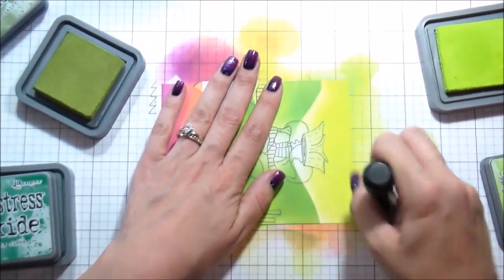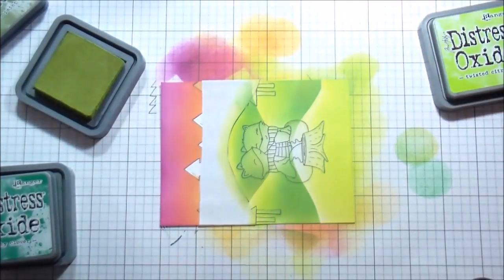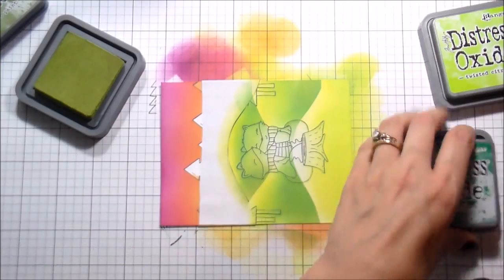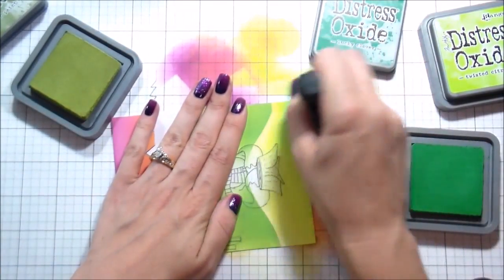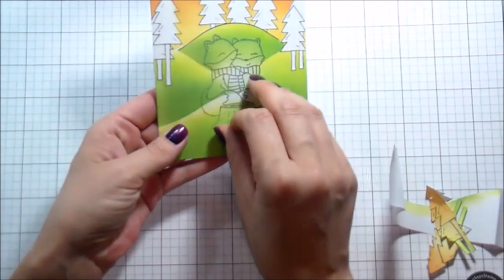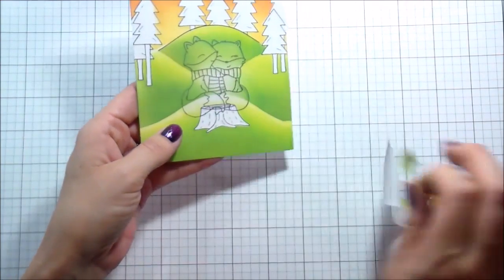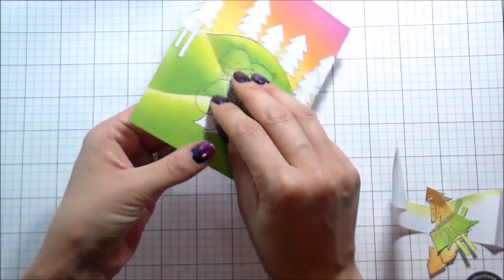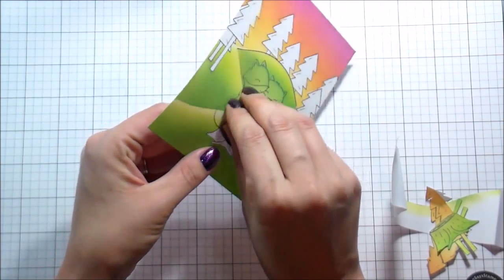The last way that we're going to just finish it off is just by adding some shading to the base of the card. Again, all the way up to that hill. I did add some more Twisted Citron because when I was doing the base layer, apparently I was super light-handed in that area.